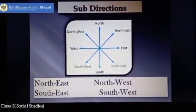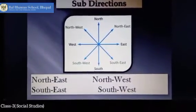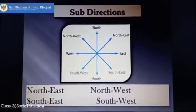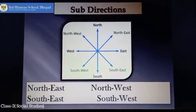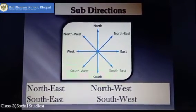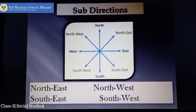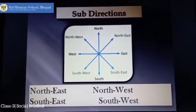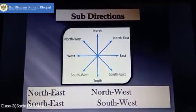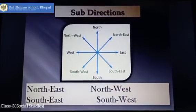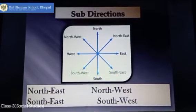There are four more directions: North-East and South-East. Children, these directions are known as sub-directions. These directions lie between the four main directions — that is East, West, North, and South.